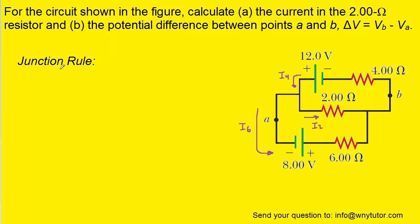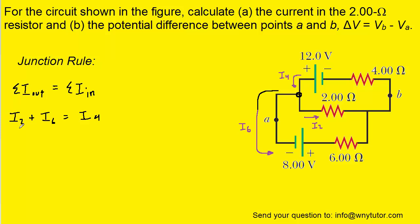We will next apply Kirchhoff's junction rule. Looking at the junction, current I4 is flowing in, while currents I2 and I6 are flowing out. The basic idea behind the junction rule is that the total current flowing out of the junction equals the total current flowing in. So we can write: I2 plus I6 equals I4. We will hold on to this equation and refer to it later.